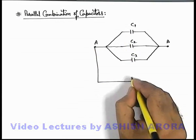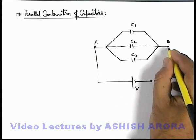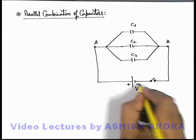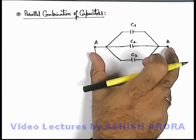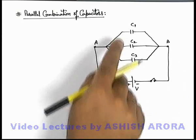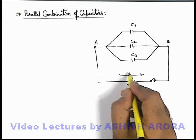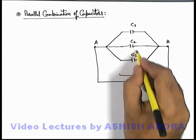Then we can connect a battery across the combination, say it is of voltage V, along with a switch. And if we close down the switch, we know that the battery will apply a potential difference V across the terminals A and B. And the positive terminal of the battery will pull charges from these 3 plates, transfer a charge to the other side, and a negative charge will appear over here.